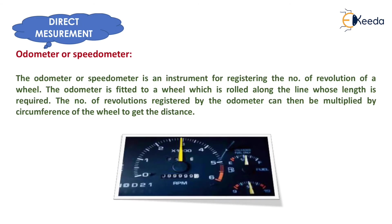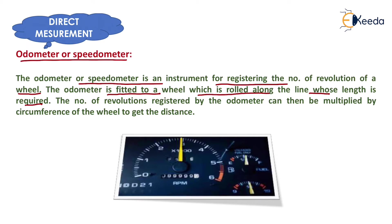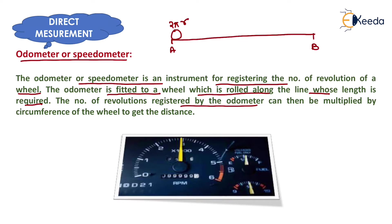The next instrument is the odometer, or speedometer, which comes in our vehicles. The odometer is an instrument for registering the number of revolutions of a wheel. It is fitted to a wheel which is rolled along the line whose length is required. The number of revolutions registered can then be multiplied by the circumference of that wheel to get the distance between two points.